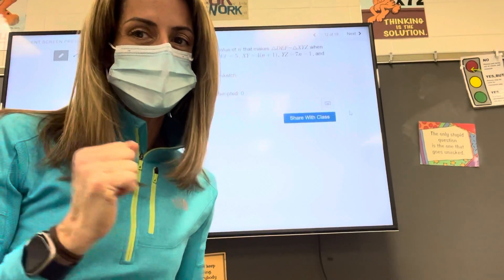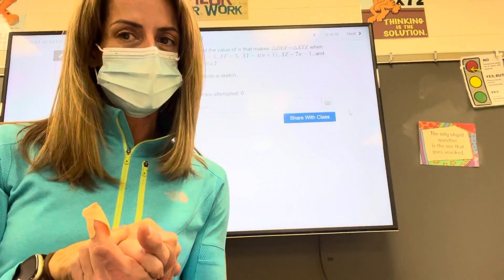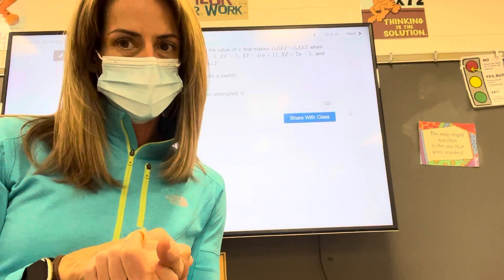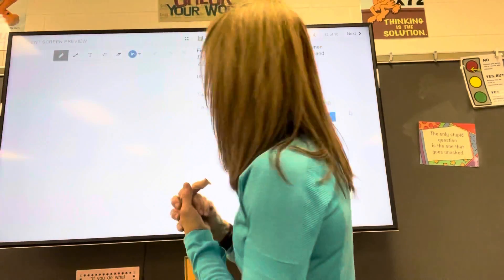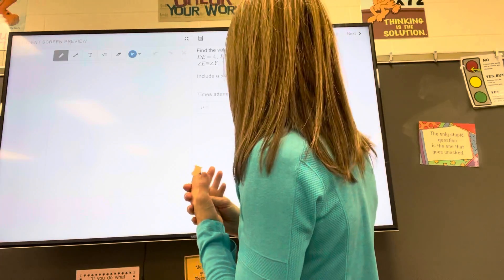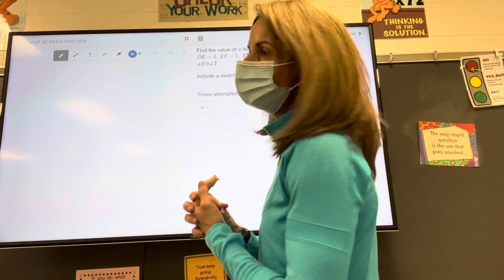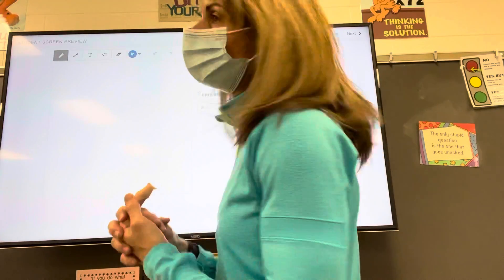All right, welcome back viewers. Today in geometry we have a side-angle-side problem for you, proving triangles similar. So we are going to draw the two triangles, put the information on the triangles, and find the value of n that makes the two triangles similar.